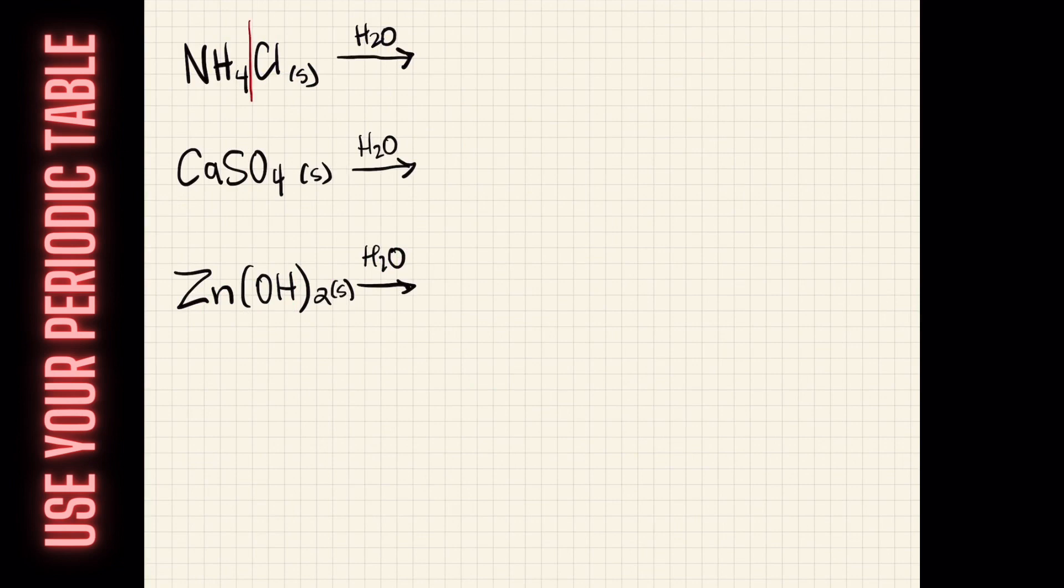Our first one, we have ammonium chloride, and when we separate the positive ammonium from the negative chloride, we can see both have 1 as their charge. This makes a positive 1 NH4 ion that's going to be dissolved in solution, and it's also going to be accompanied by 1 chloride ion that is also dissolved into solution.